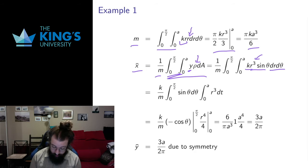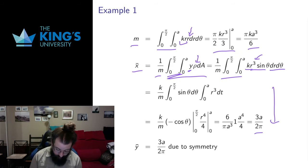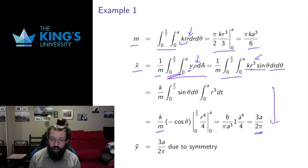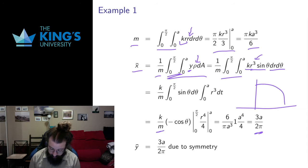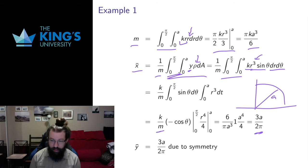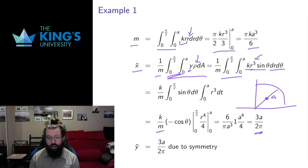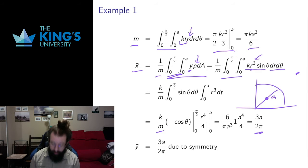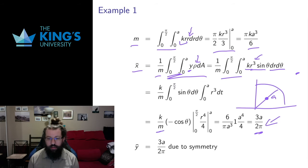I integrate that dr d theta over these bounds and do the details of those integrals. Dividing by the mass at the end gives me the x-coordinate of the center of mass: 3 over 2 pi times a. This is a nice place to check that the result is reasonable. This object has radius a, and the x-coordinate of the center of mass is less than a, so it sits somewhere inside — which is believable. If the center of mass were somewhere outside, I would know something had gone wrong.